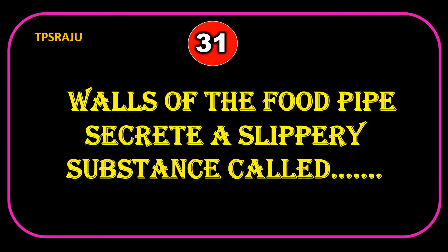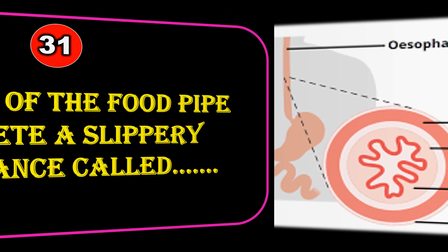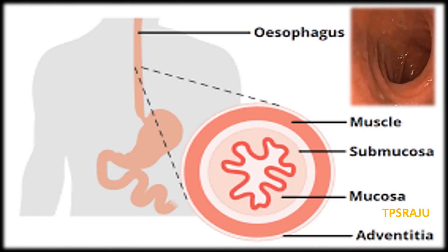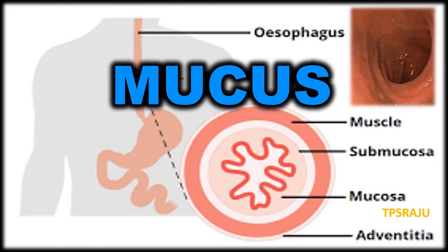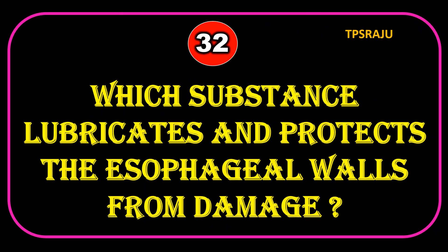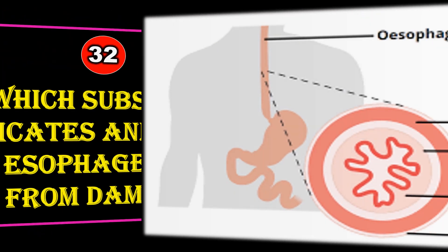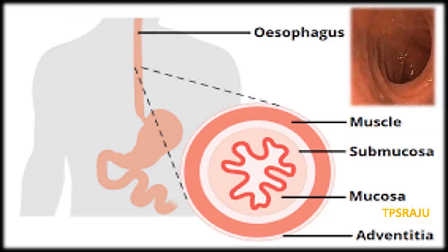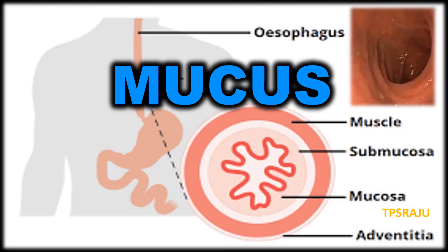The walls of the food pipe secrete a slippery substance called mucus. Mucus lubricates and protects the esophageal walls from damage.